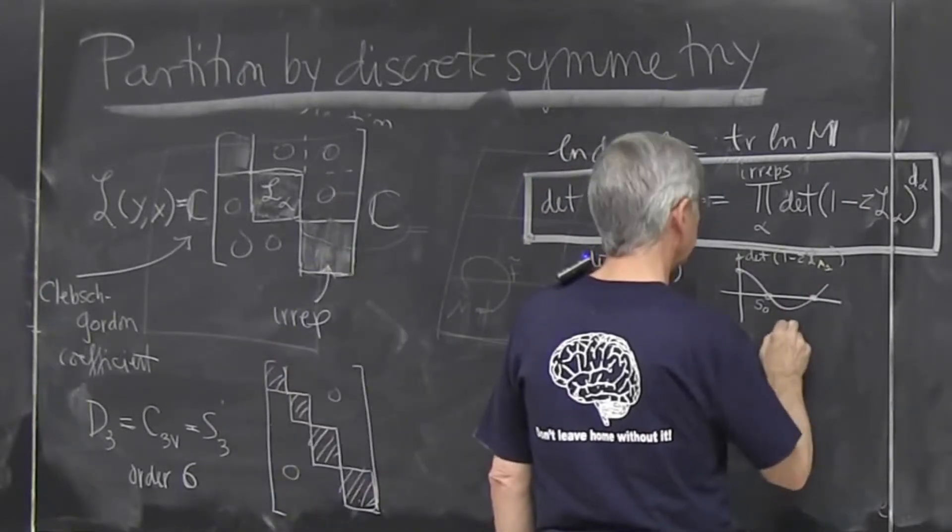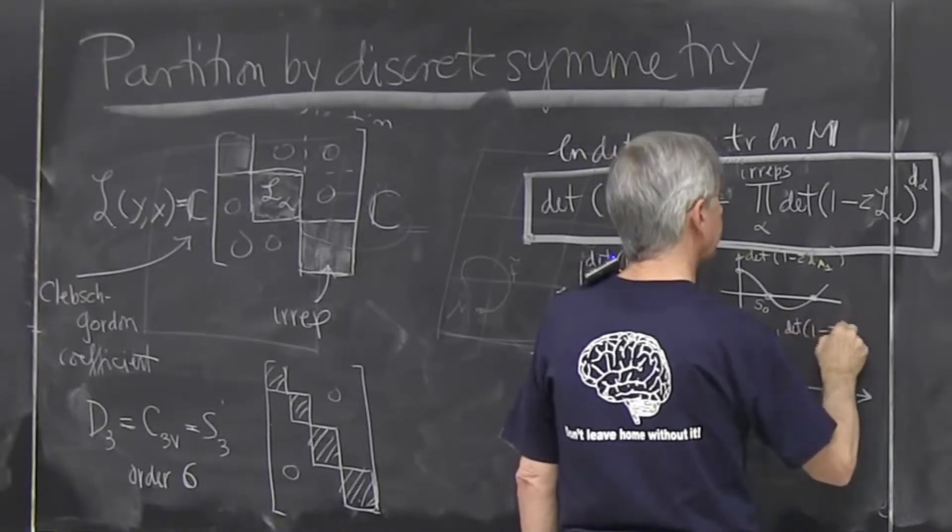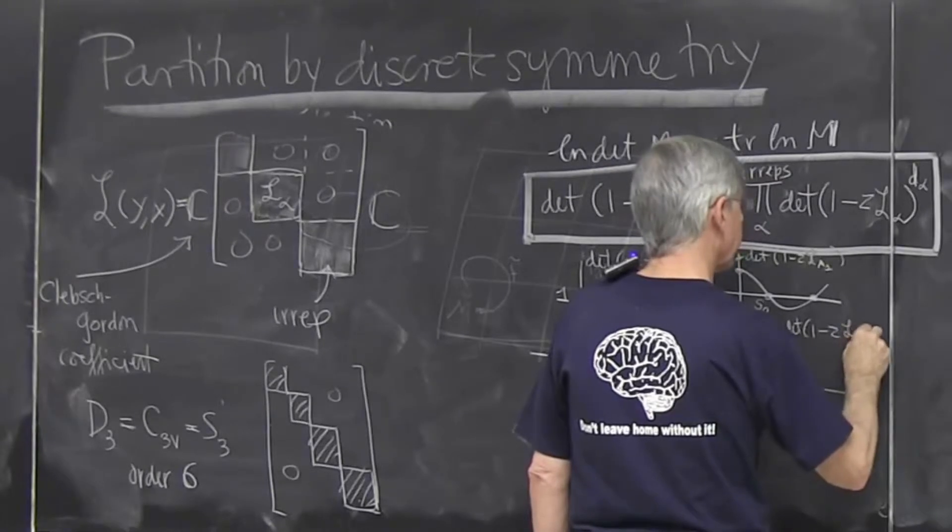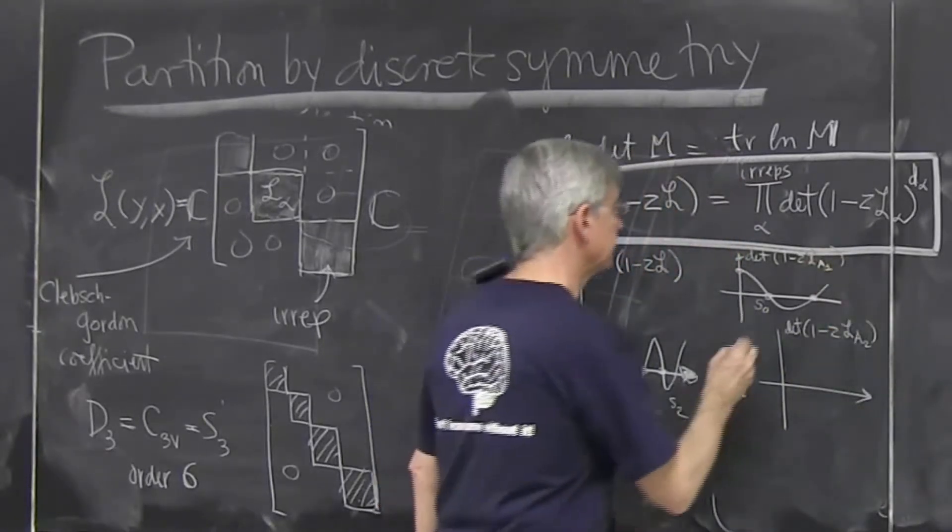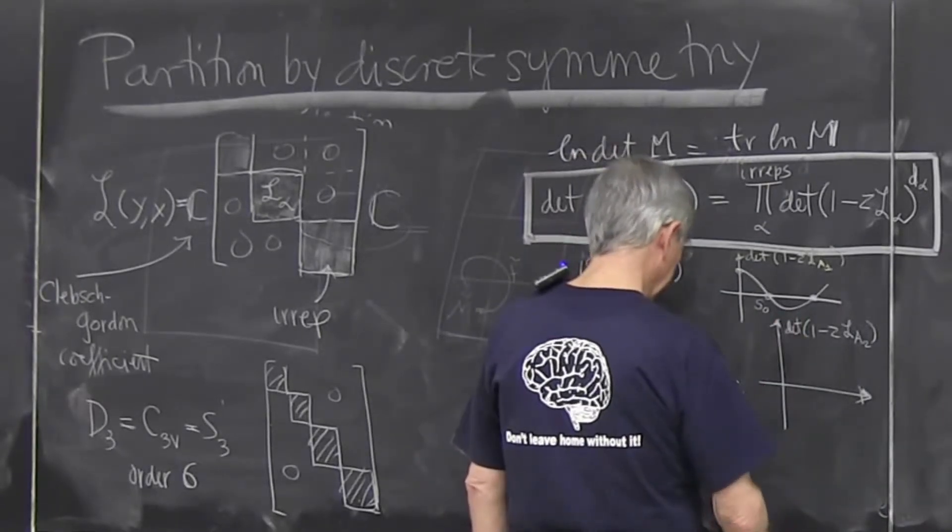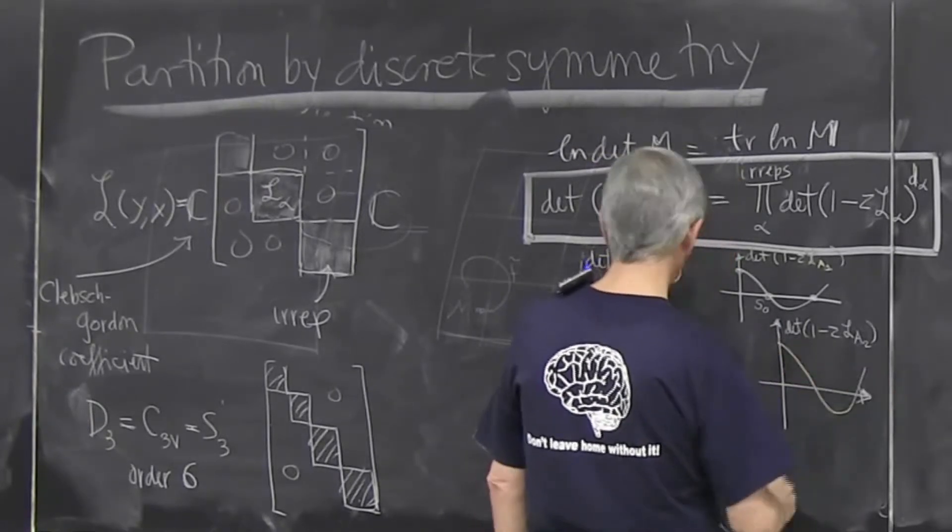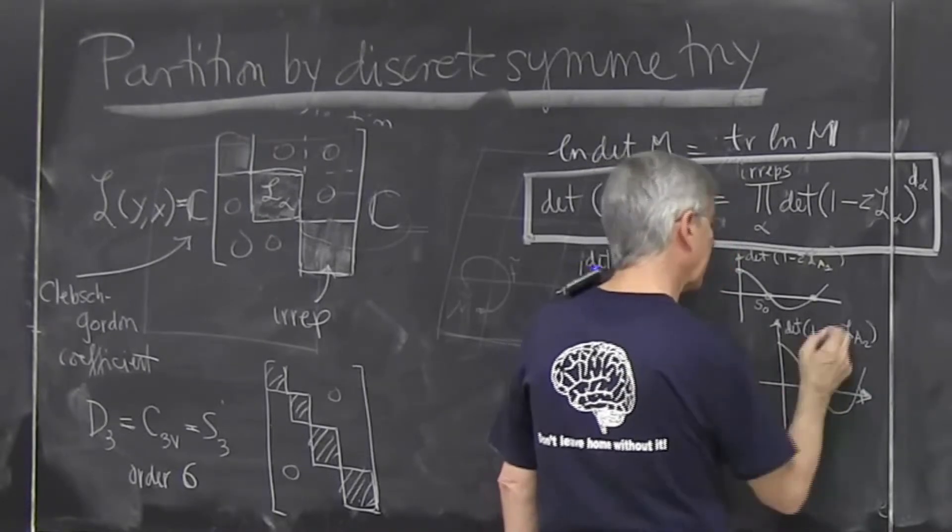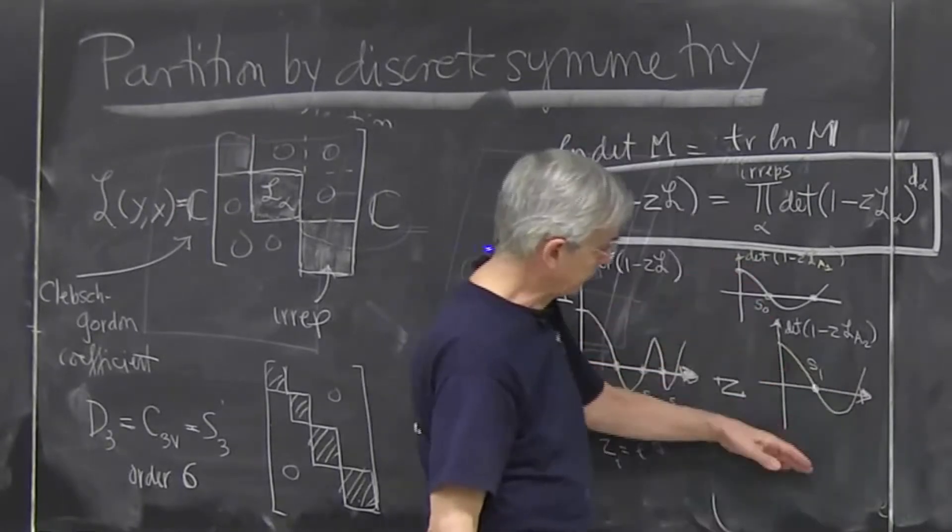Then there is another term in this product. It's called determinant of 1 minus z. And there is always a fully anti-symmetric state, which is also one-dimensional. That's true always. And that one looks different because it has different eigenvalues. And maybe, most likely, its leading eigenvalue is the thing that we call S1 here. And so on.